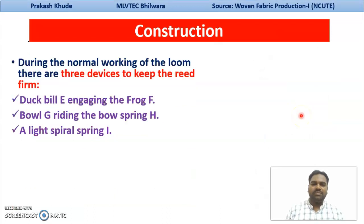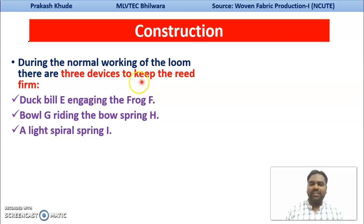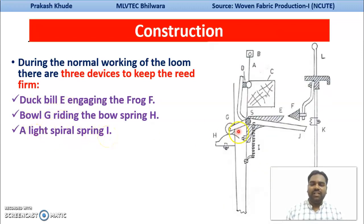We will see how this mechanism helps during normal working to keep this reed firm. Three devices are required to keep this reed firm: one is your duckbill, another is your anti-friction bowl, and the third is your spiral spring. We will see how this duckbill, anti-friction bowl, and spring help in keeping your reed firm.